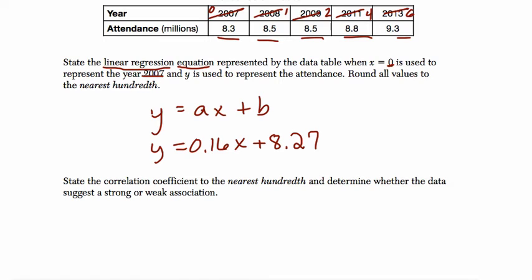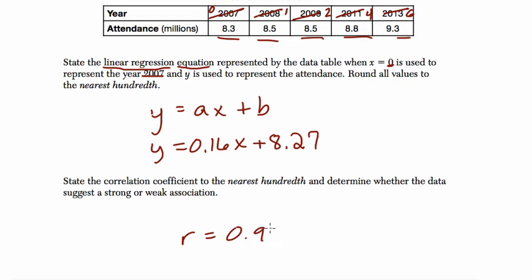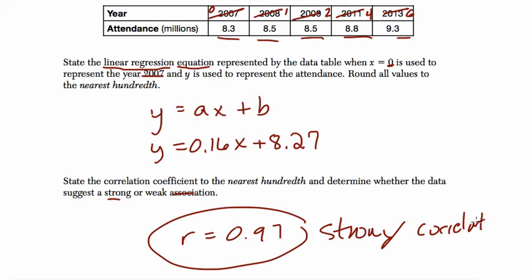And then we want our r value. It's 0.97, and this suggests a strong correlation. Make sure you say that—strong correlation. We've got the strong correlation because r is very close to 1. 1 would be a perfect correlation. Anything close to negative 1 is also really great. Negative 1 is a perfect correlation except the slope would be negative because as x increases, y decreases.